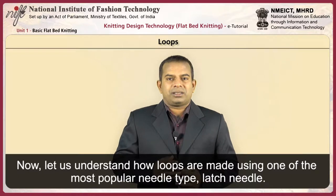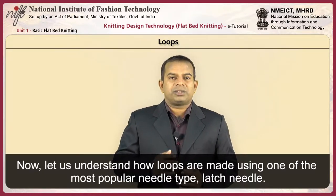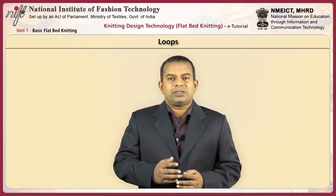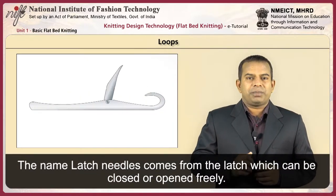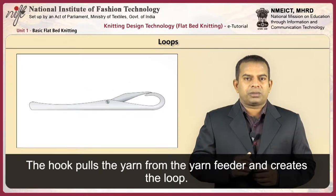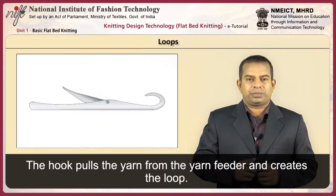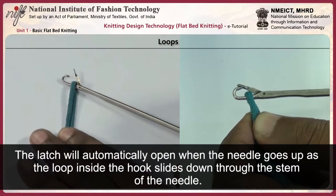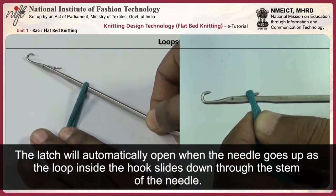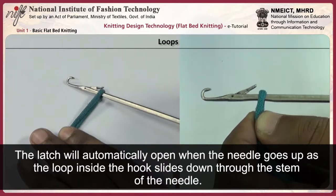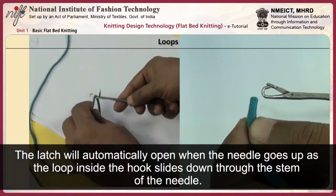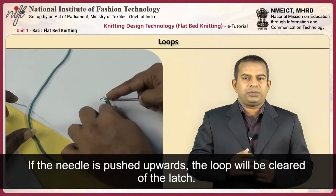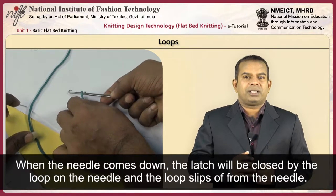Now let us understand how loops are made using one of the most popular needle types — the latch needle. The name latch needle comes from the latch, which can be closed or opened freely. The hook pulls the yarn from the yarn feeder and creates the loop. The latch will automatically open when the needle goes up, as the loop inside the hook slides down through the stem of the needle. If the needle is pushed forward enough, the loop will be cleared of the latch. When the needle comes down, the latch is closed by the loop on the needle and the loop slips off from the needle.